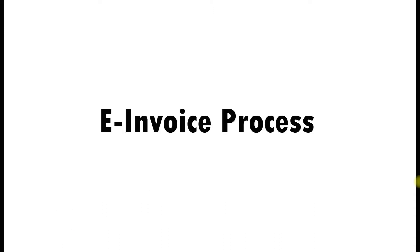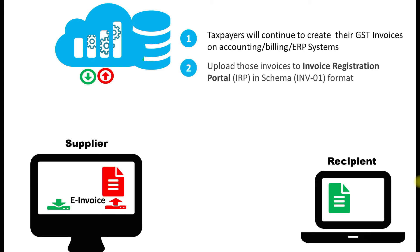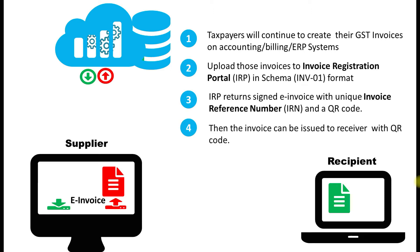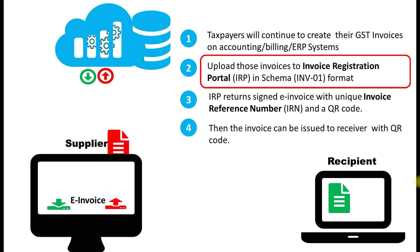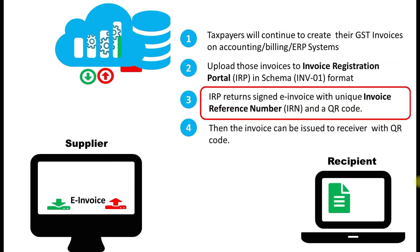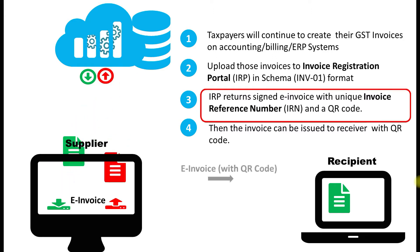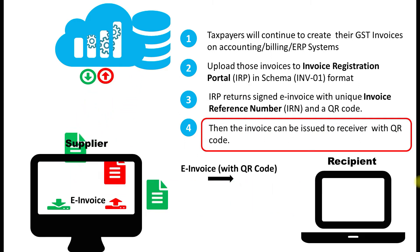Now let's see the e-invoicing process. Generation of e-invoicing is very simple and easy — we need to follow a 4-step process. First, every taxpayer will continue to create their GST invoice on their accounting or billing ERP system. Next, that invoice needs to be uploaded to the Invoice Registration Portal (IRP) in schema INV-01 format. Once validated, the IRP will return a signed e-invoice copy with a unique Invoice Reference Number and invoice details embedded with a QR code, which is then issued to the customer.